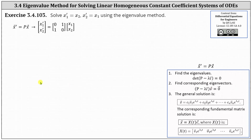We're asked to solve the system of differential equations x1 prime equals x2, and x2 prime equals x1, using the eigenvalue method. The first step is to write the system as the vector equation x prime equals P times x. Notice how matrix P is a two by two matrix with entries zero, one in the first row, and one, zero in the second row.